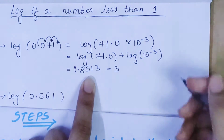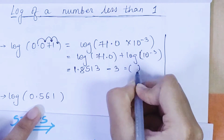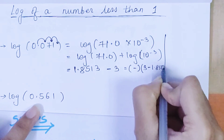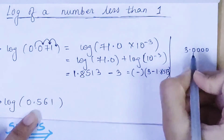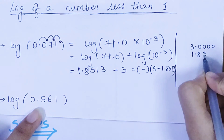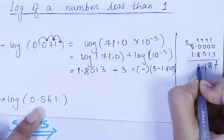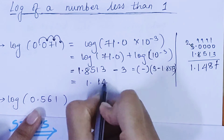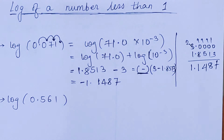Now solve the addition/subtraction: we have 1.8513 + (−3). Taking −3 common: −(3 − 1.8513). Subtracting: 3.0000 − 1.8513 = 1.1487. So the final answer is −1.1487. You are done with your answer.